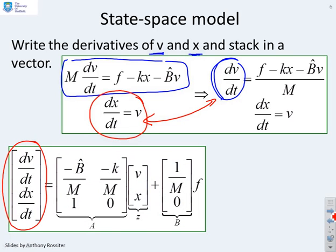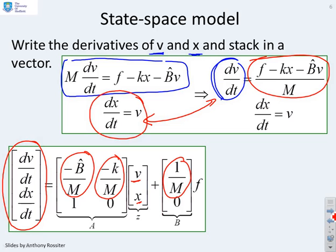And now I need to put on the right hand side the equations which match. So if I look at this top equation, what have I got? I've got a minus b hat over m times v. So there it is. Minus b hat over m times v. A minus k over m times x. So there it is. And then a plus 1 over m times f. So the top row gives me the top equation. And then for the second equation I had dx/dt equals v. So you see I've got a 1 in the bottom corner of the A matrix.